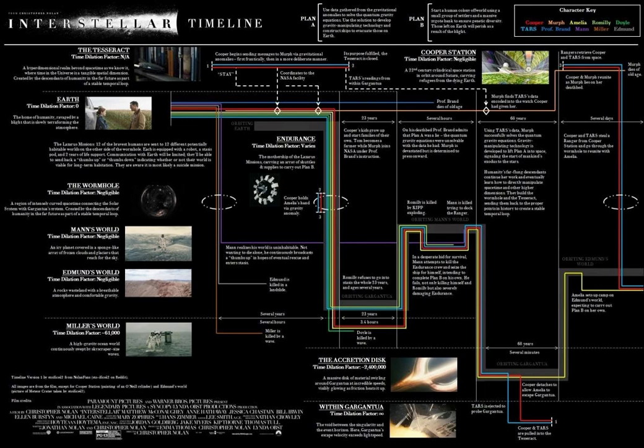It basically tells the whole story of everybody in this timeline, which is pretty cool. It has notations and shows all the time skips, all the warps, all the wormholes and warp times. It shows when everybody dies or if they're going to die, what happens to everybody at the end, and it talks about what's happening within the Tesseract towards the end of the movie. It covers Edmund's world, Mann's world, Miller's world, and the wormholes.